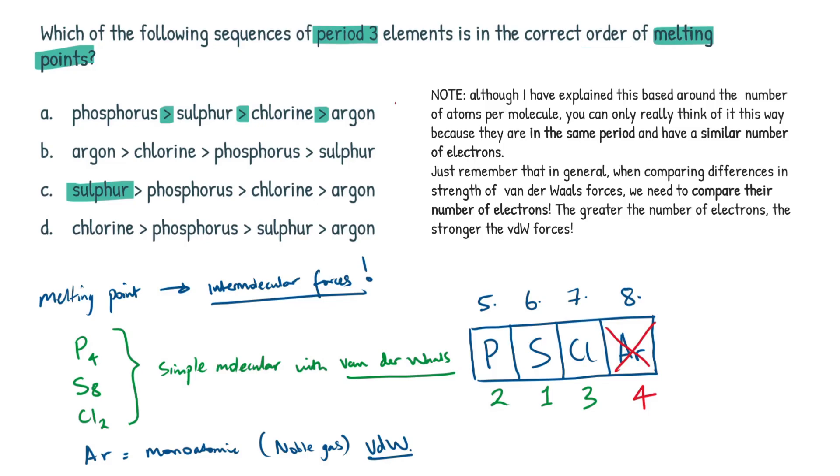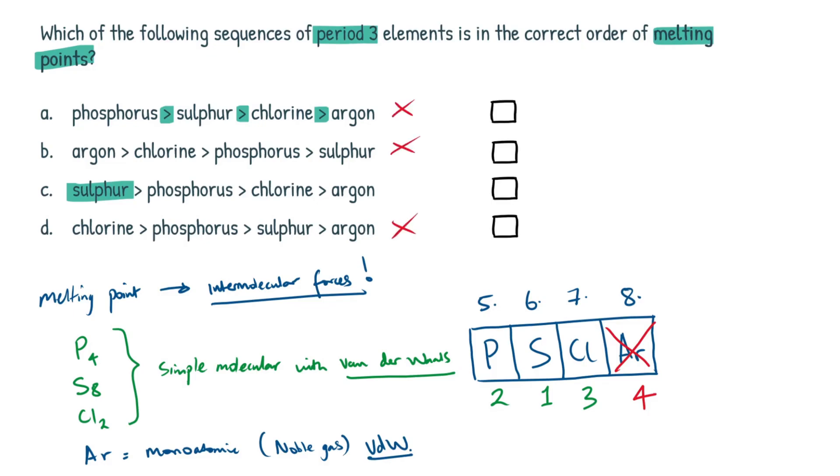So then, our answer here is not going to be A, it's not going to be B, it's not going to be D, it's going to be C, because sulfur is the strongest, all the way along to argon. Okay, and that is our final answer.